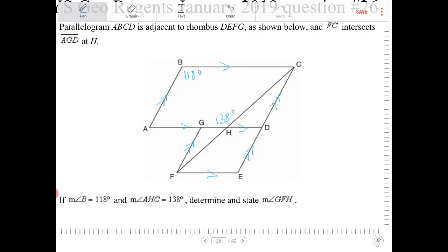So if angle AHC is 138, that means this angle in here must be 42 because that angle there and 138 must be supplementary. So that must be 42.